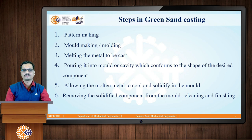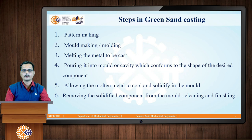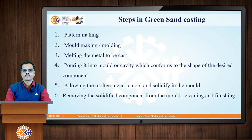Step number one is known as pattern making. A pattern is a replica or duplicate of the casting which is to be produced. The most common materials for patterns are metallic, wooden, thermocol, rubber, plastic, or resin. The dimensions of a pattern are always slightly more than the dimensions of the casting to be produced, because we are getting the components with the help of liquid to solid conversion, and therefore we have to provide a shrinkage allowance.